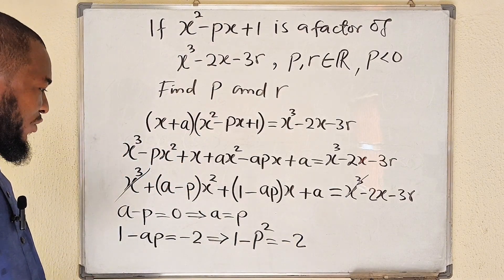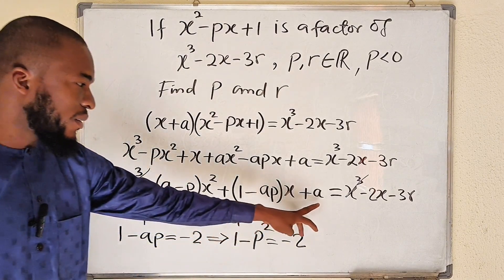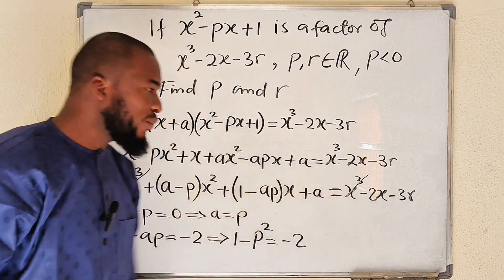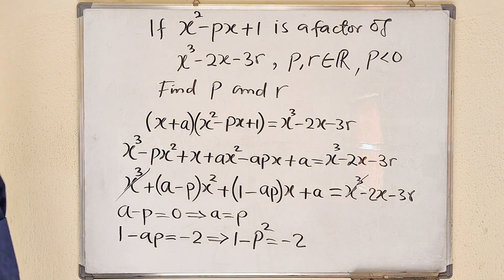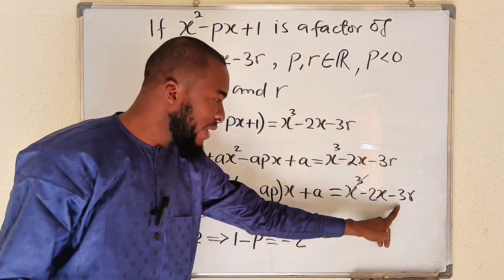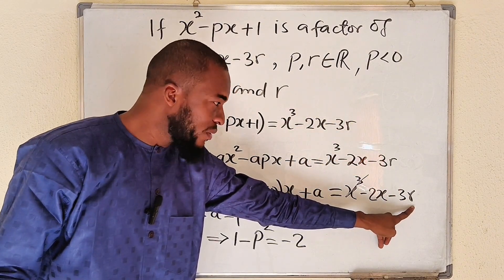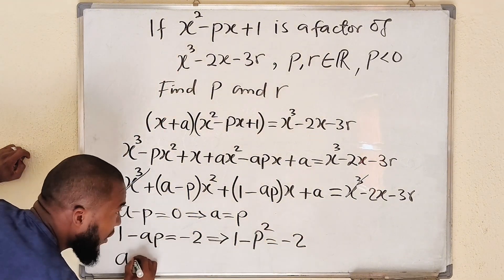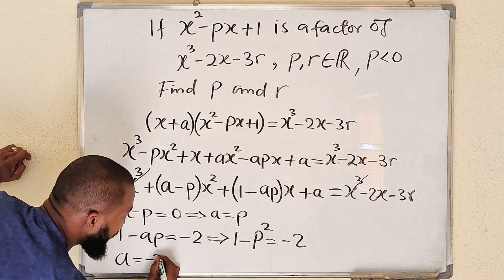So the last thing I want to write here is the constant. This is our constant, a equals negative 3r. Because this is also a constant. Remember, r is a real number, so negative 3r is a constant. And we have a constant here. Therefore, a equals negative 3r. But we have seen that a is p.